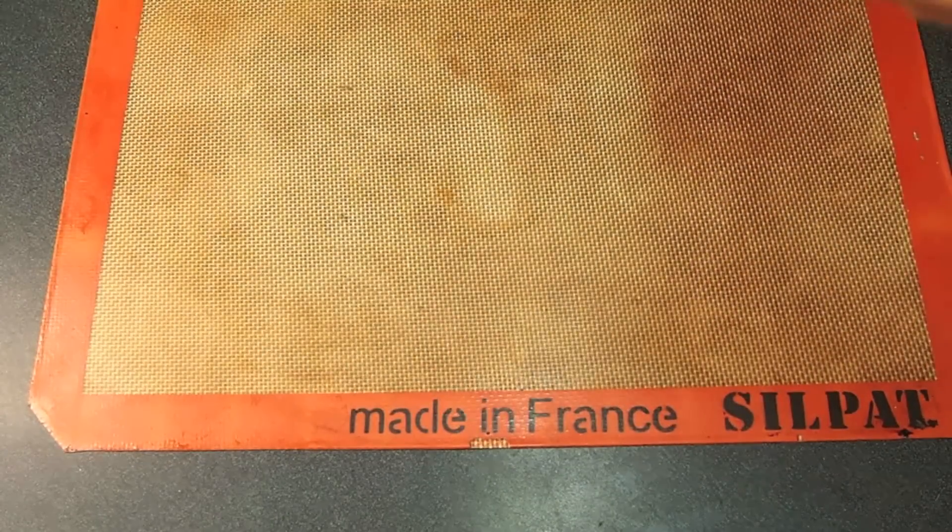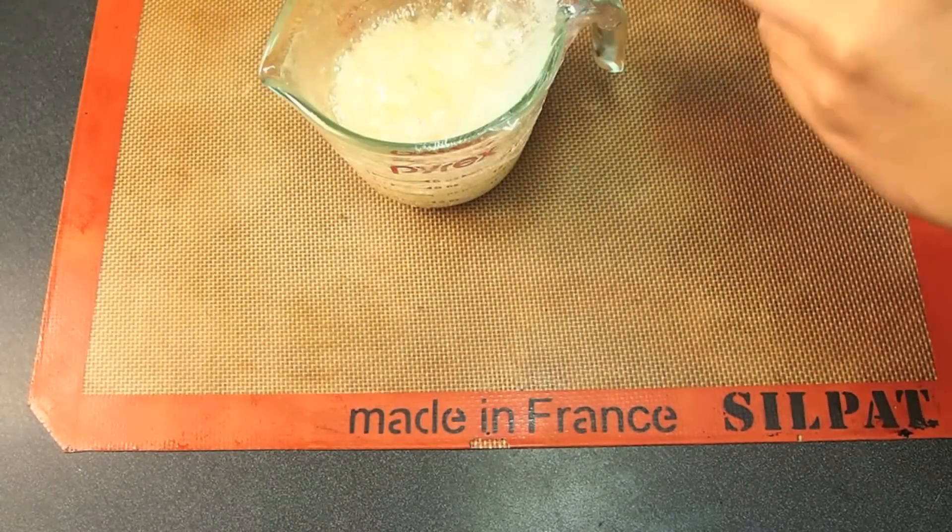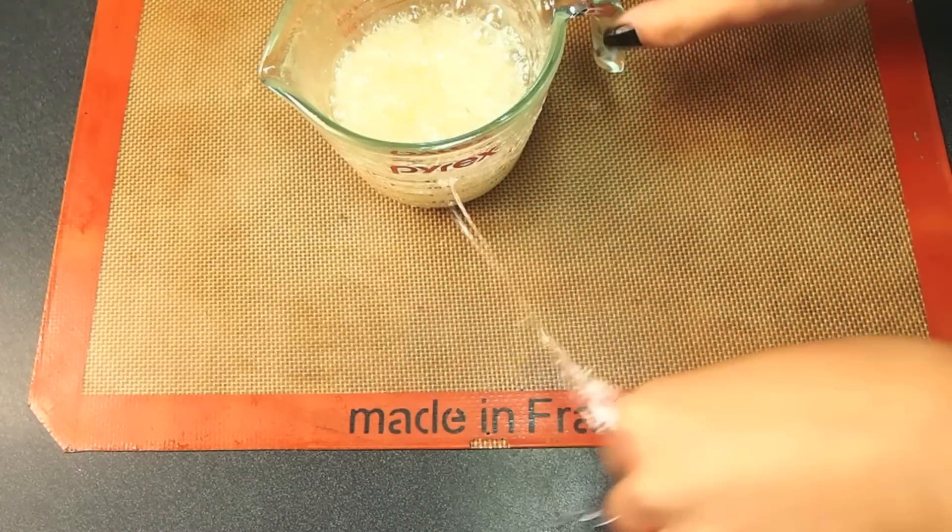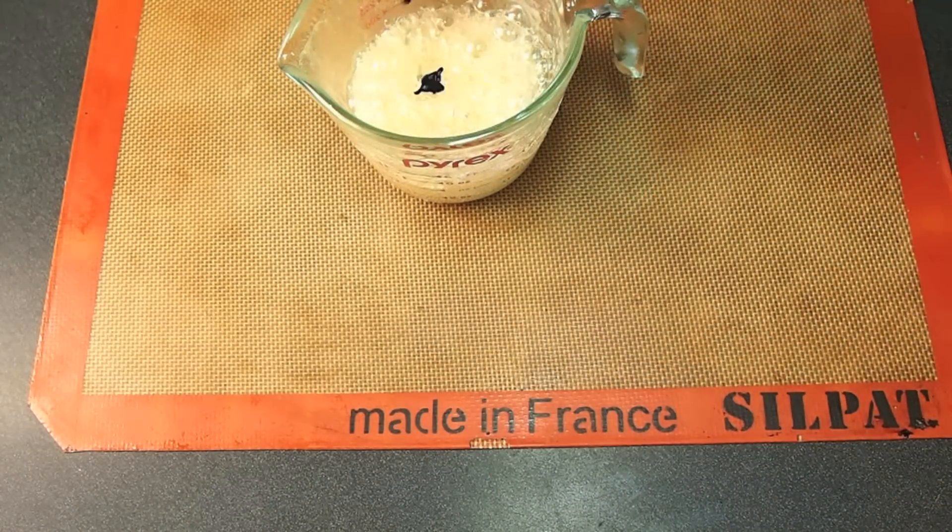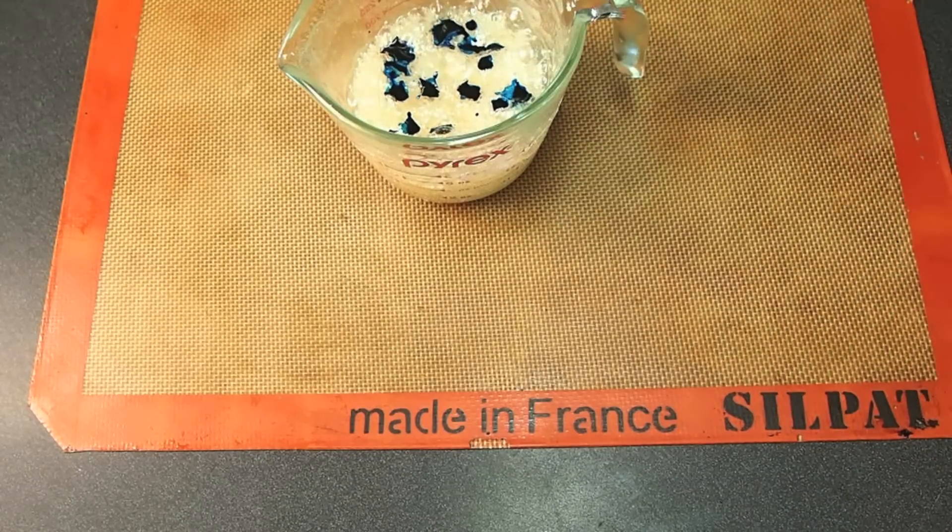This is the part you want to work really fast. Uncover the plastic, and then drip in little drops of your blue color. Now you can stir. Be very quick about it.